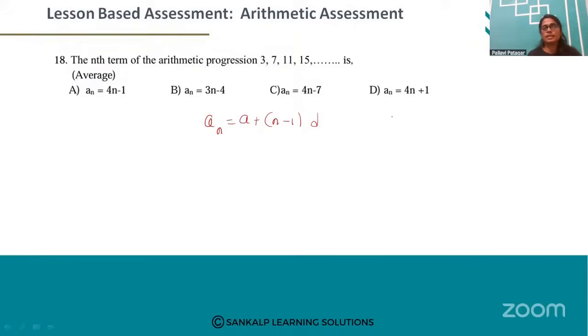The first term a is equal to 3. To find the common difference d, we have a2